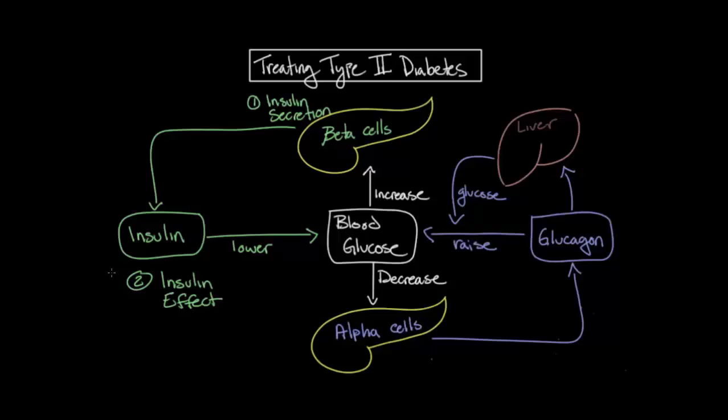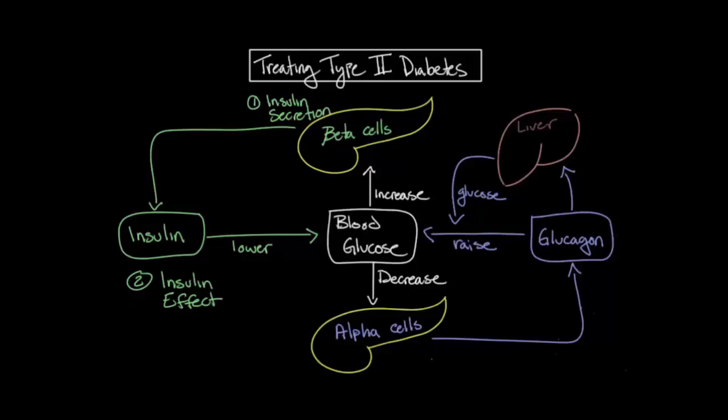In the treatment of type 2 diabetes, some medications are given to increase insulin secretion to help overcome the resistance, and others are given to directly decrease the insulin resistance in the second step. So let's now discuss the specific treatments for type 2 diabetes and the mechanisms by which they work.